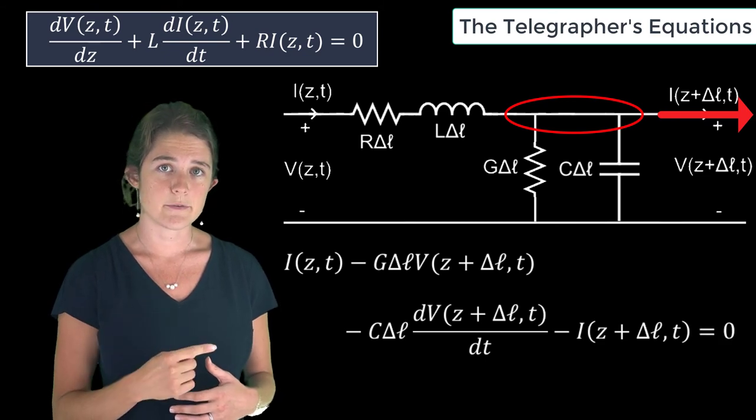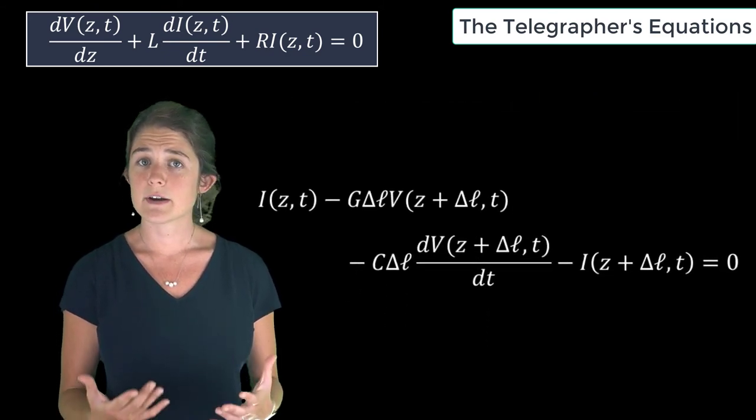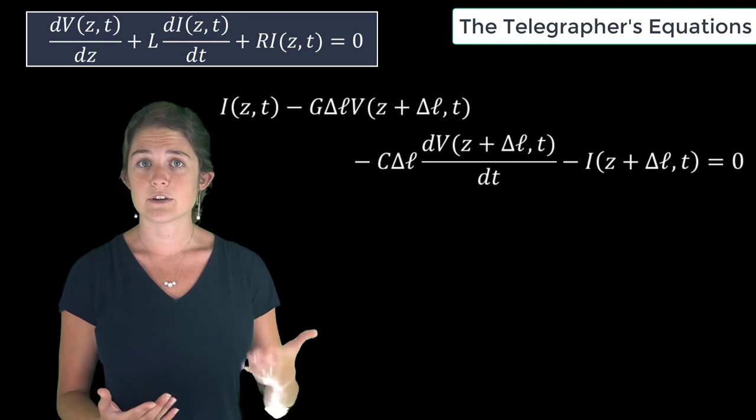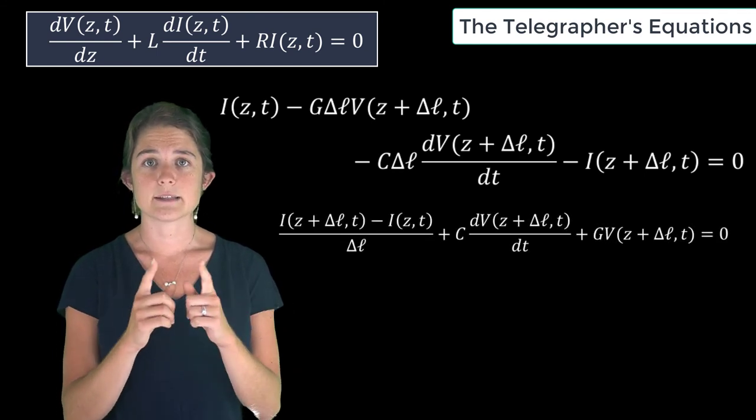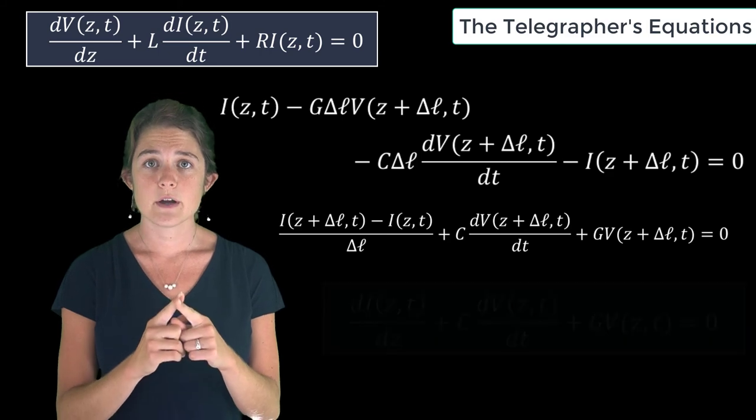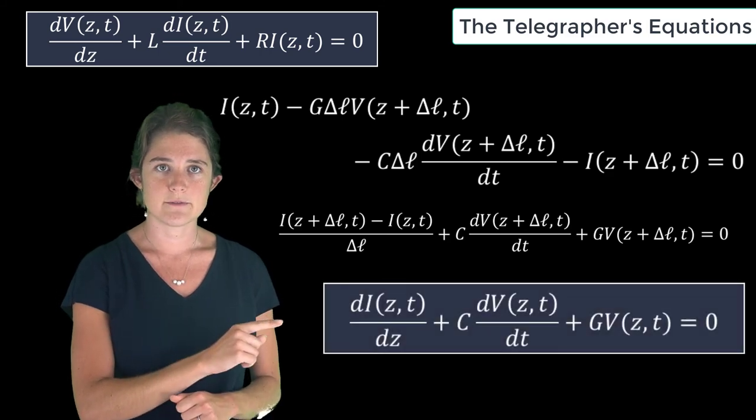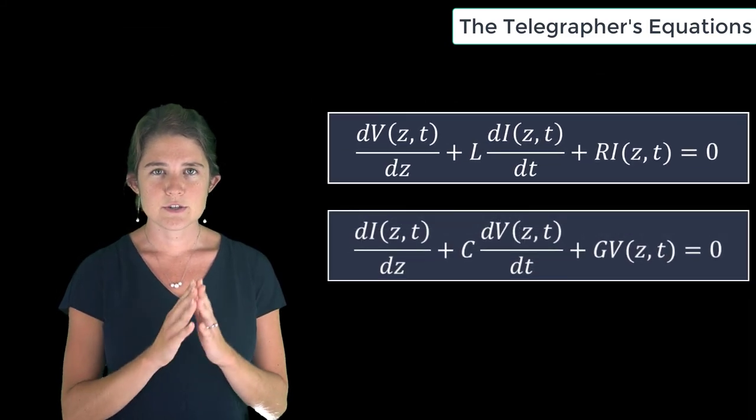So again, we can rearrange this equation to show change in current per length, and then take the limit as the length Δℓ approaches zero to obtain this spatial derivative.